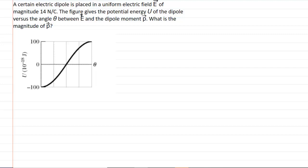In this problem, we have an electric dipole that is placed in a uniform electric field. And anytime an electric dipole is placed in a uniform electric field, then that electric dipole can attain some electric potential energy. So let's take a look at the equation that gives us the electrical potential energy of that dipole.